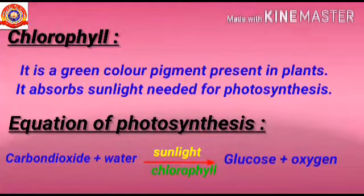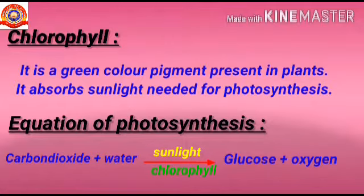Fourth point: the equation of photosynthesis. Carbon dioxide plus water, in the presence of sunlight and chlorophyll, produces glucose plus oxygen. Oxygen is released during daytime.